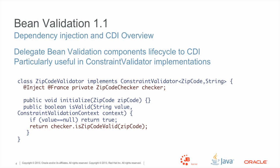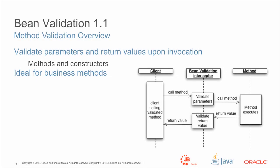In the isValid method, we actually use this component to execute what we want to do. This leads to the big signature feature of Bean Validation 1.1: method and constructor validation.